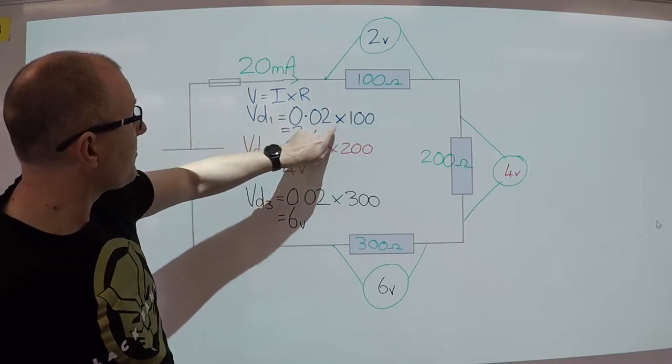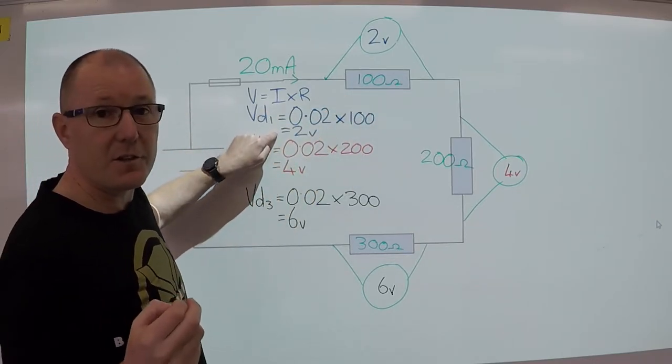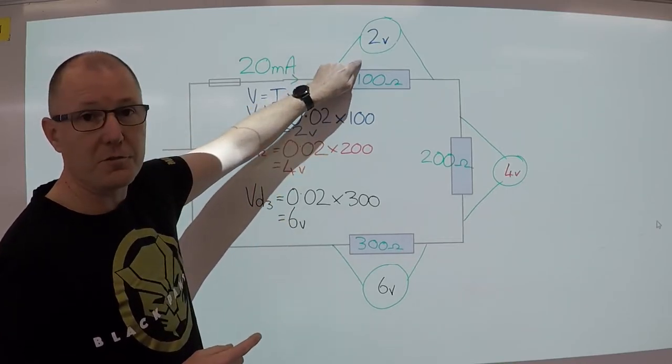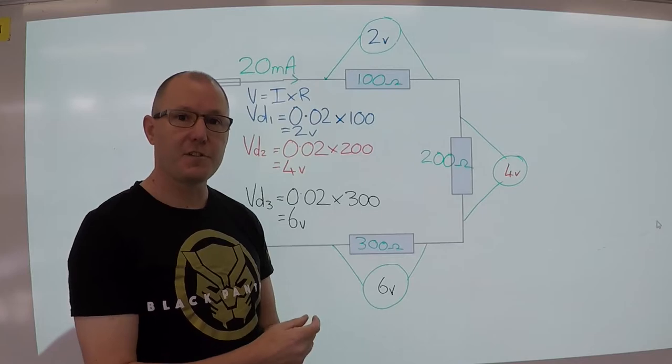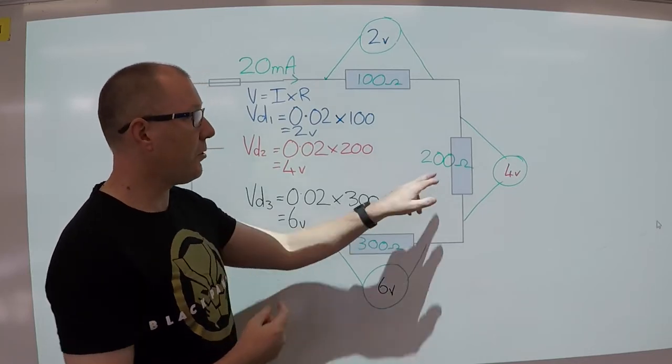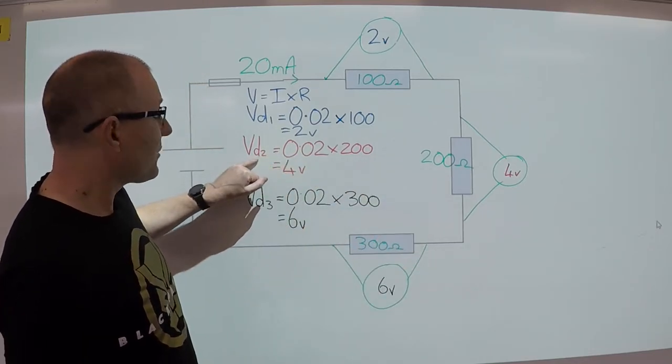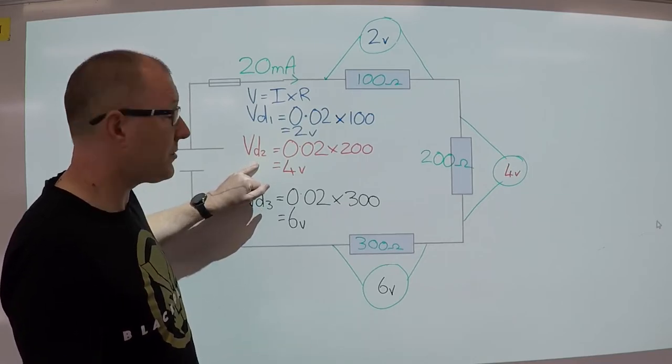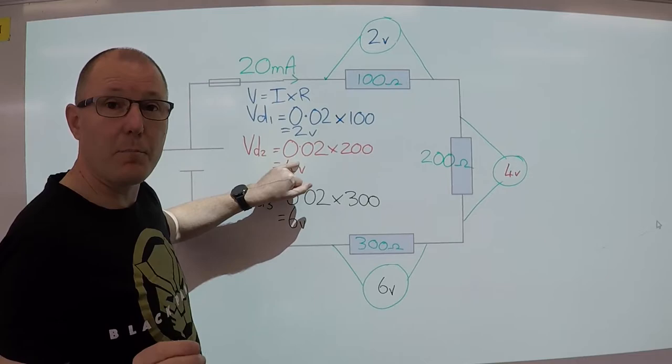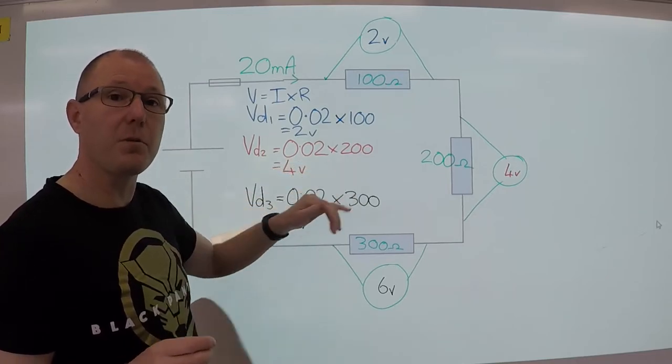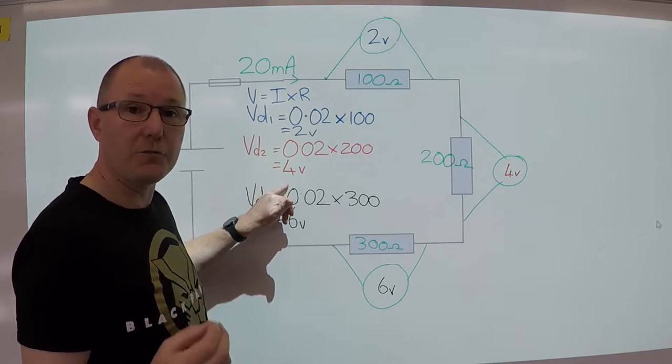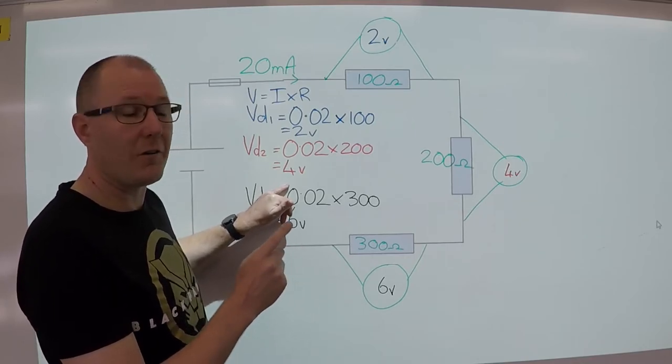So we multiply those and that gives us a voltage drop across that resistor of 2 volts. Across resistor 2, what we have is 200 ohms. So same formula, voltage equals current by the resistance. So we have 0.02 multiplied by the 200 ohms and that gives us a voltage drop across resistor 2 of 4 volts.